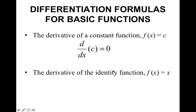The other one is the identity function, so f of x equals x. That is just your parent line, which goes through the origin and has a slope of 1. If you were to draw little tangent lines along that line, all of those tangent lines would also have a slope of 1. So the derivative of x with respect to x is equal to 1.